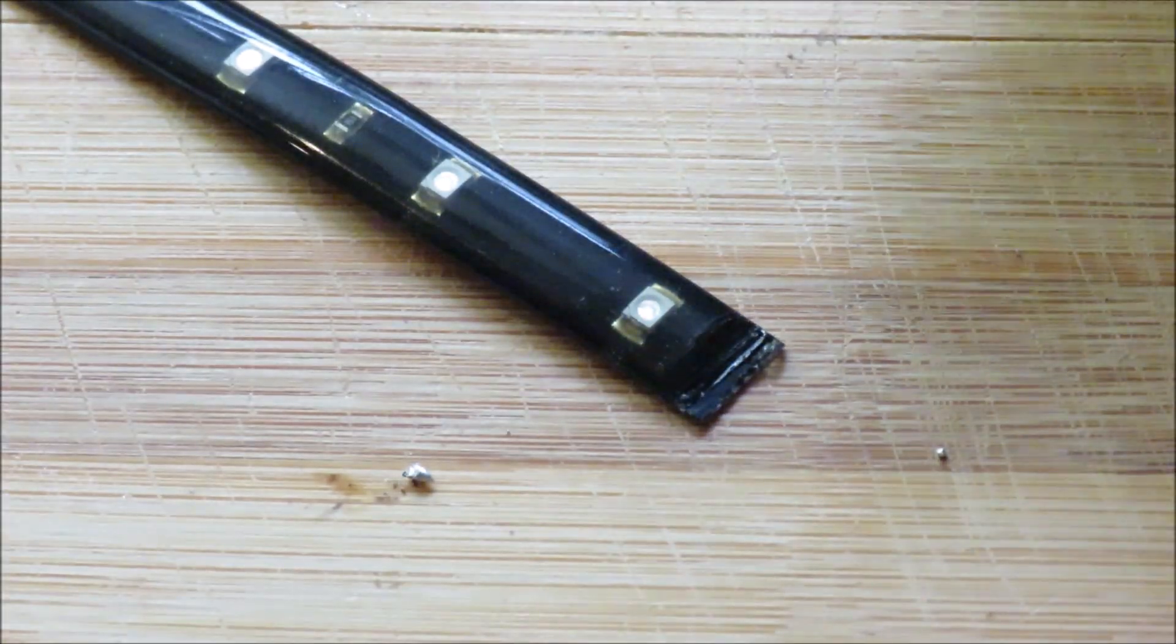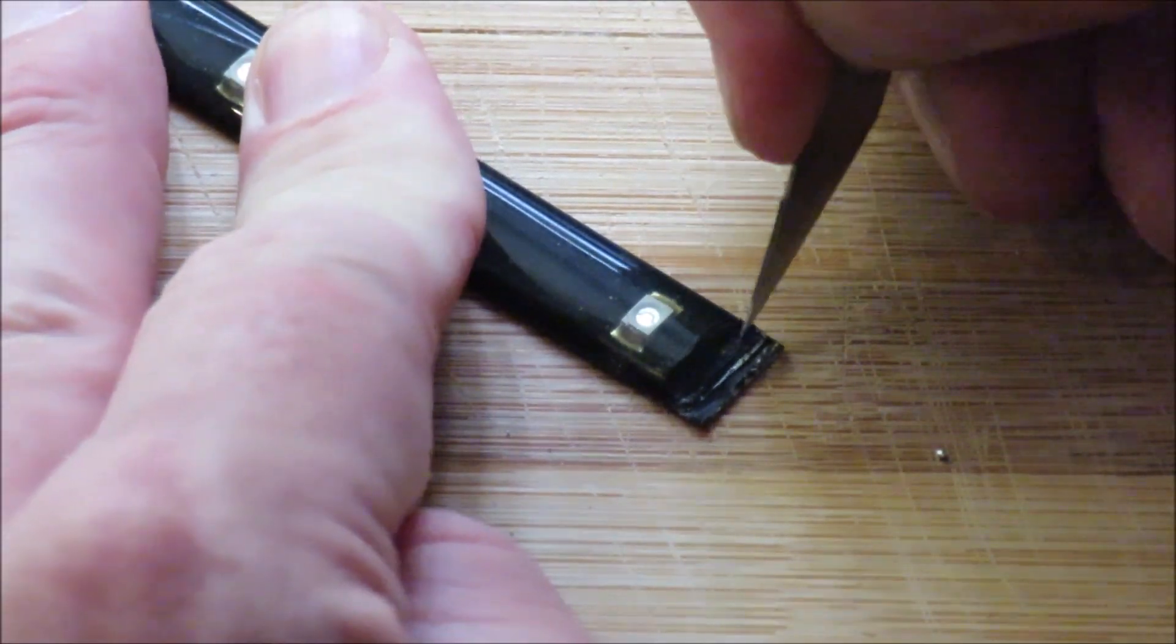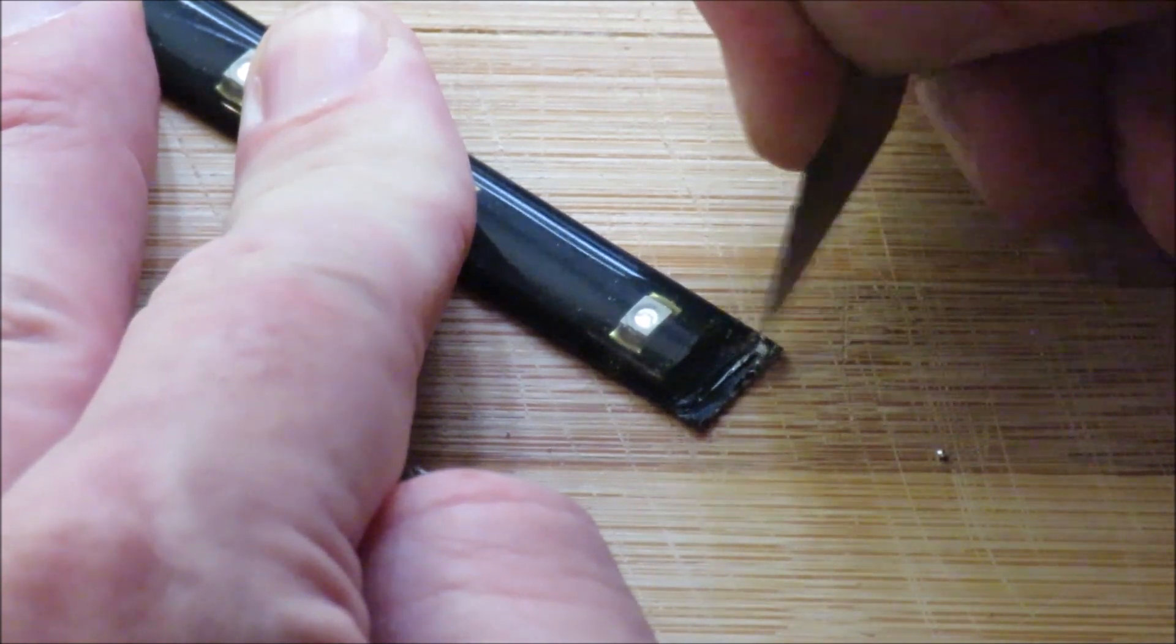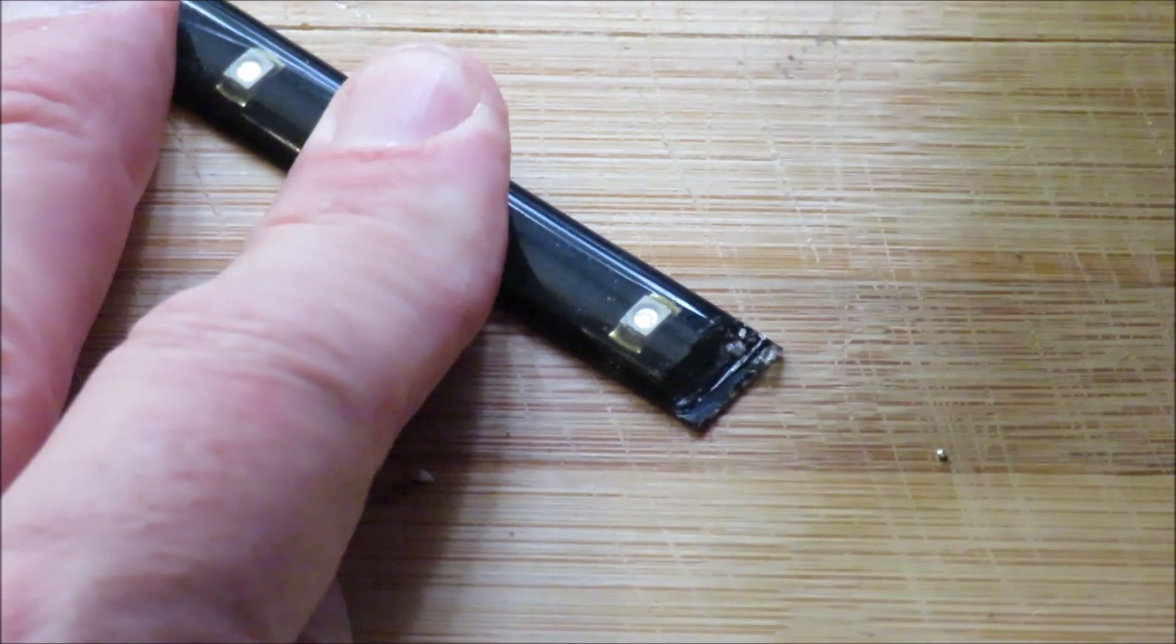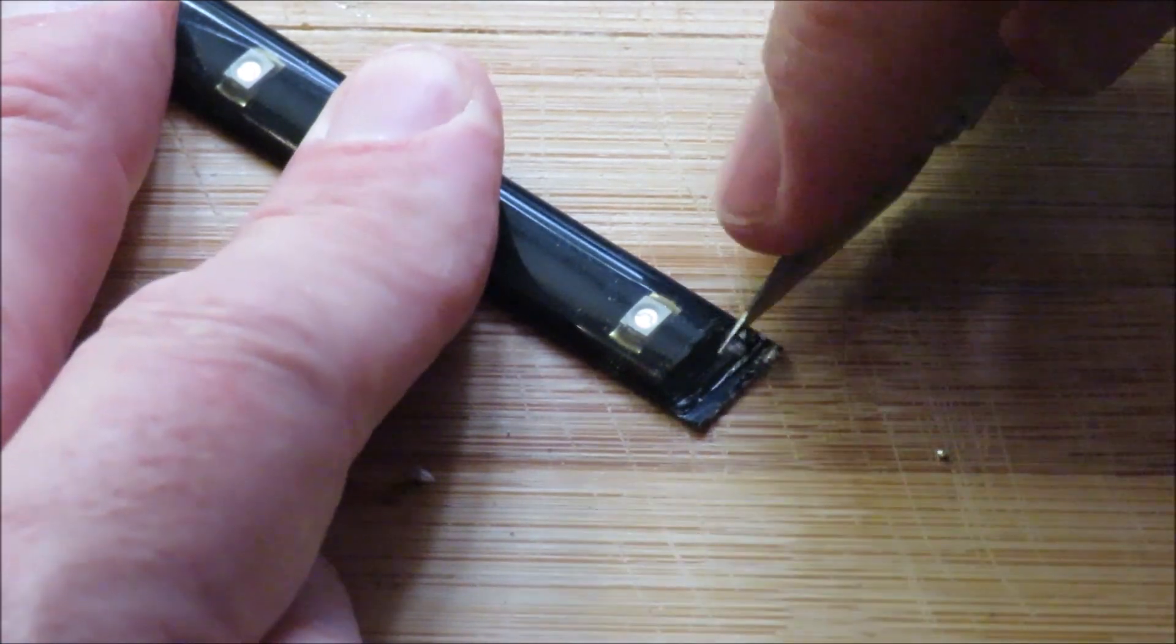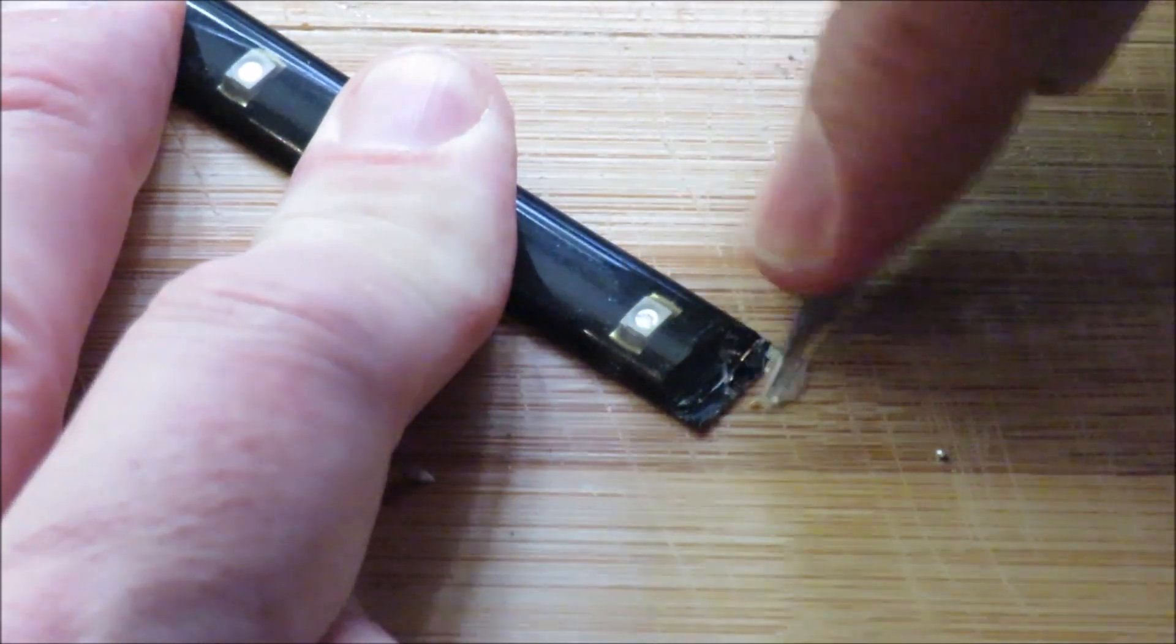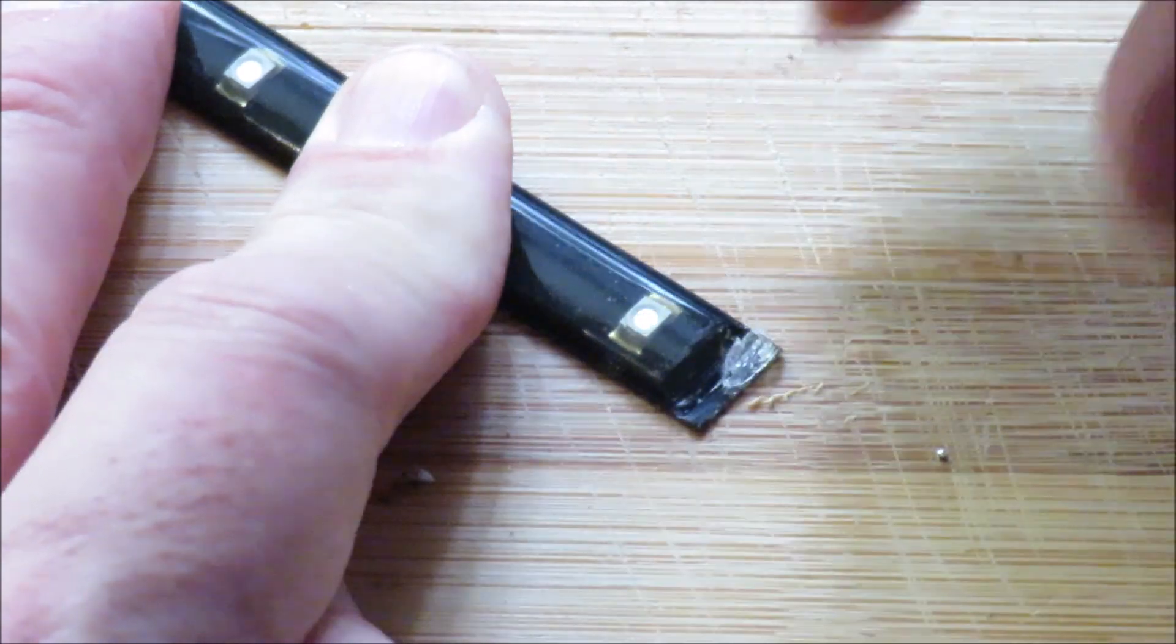What I want to do now is I just want to get some of the silicon on this side away. And I'm going to start chipping at it with my craft knife. Chipping is not working. So I'm just going to cut a little bit away.